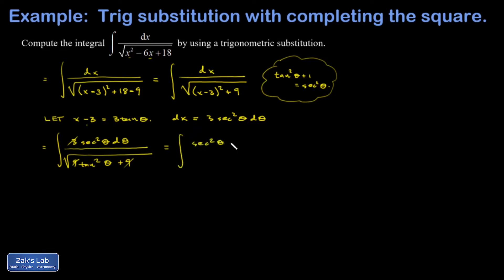So I've got sec² θ dθ in the numerator. In my square root I have tan² θ + 1, which is just sec² θ, but then I square root it, so I get sec θ. One factor of sec θ is going to cancel, leaving me with the integral of sec θ dθ, which is one that I just have memorized because the derivation is so horrible. That's ln|sec θ + tan θ| + C.